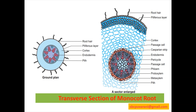Endodermis is made up of single-celled, barrel-shaped parenchymatous cells. Vascular tissues are radially arranged. Xylem and phloem are separated by sclerenchymatous conjunctive tissues. The large portion is occupied by pith, which consists of abundant starch grains.